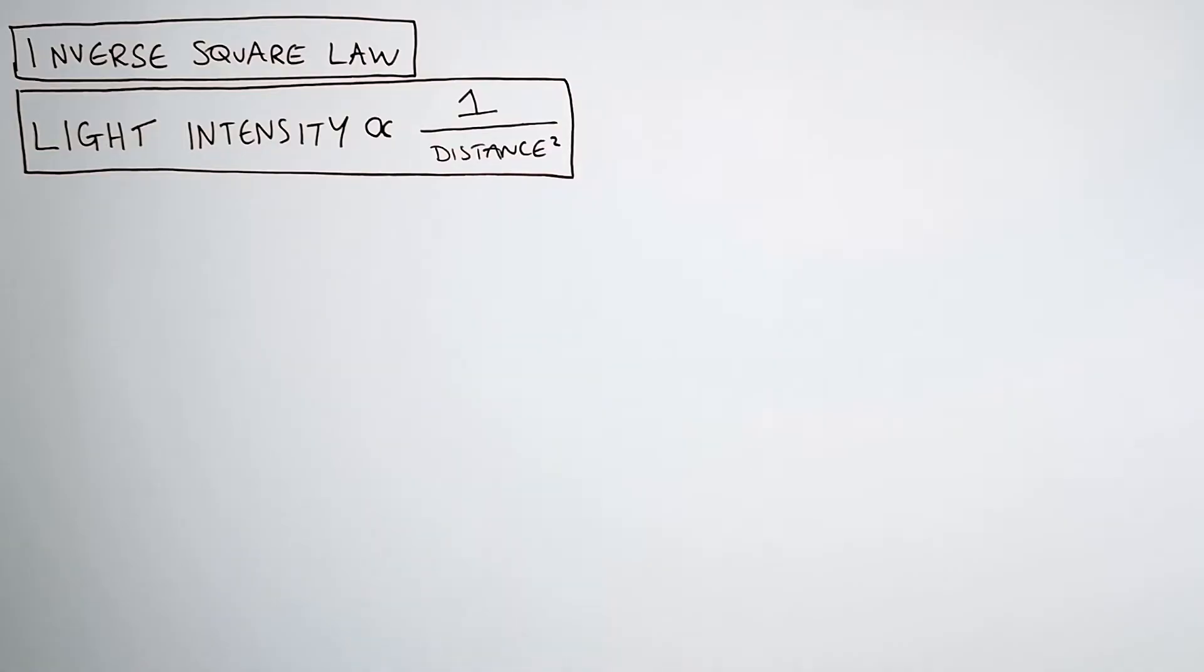We're now going to use the inverse square law to produce a graph of light intensity against volume of oxygen produced. And this is how we do it. So the inverse square law is light intensity is proportional to 1 over distance squared.